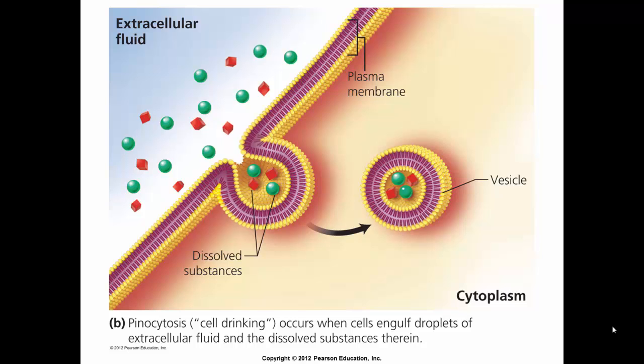Pinocytosis, on the other hand, means cell drinking. It occurs when the cell engulfs droplets of extracellular fluid and the dissolved substances contained within. The process is pretty much the same — just the difference is droplets of fluid versus large particles as in cell eating. The plasma membrane will come up, engulf it, pinch around it, and take the vesicle within the cell, into the cytoplasm.